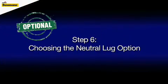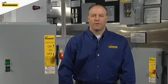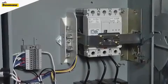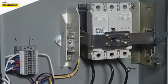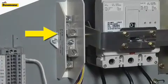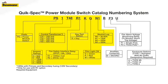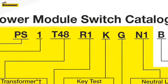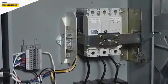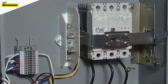Step six partly depends on your local code requirements for isolated neutral lug. We offer different options to match the load configuration of each power module. If your local code jurisdiction requires this feature, simply add the code that corresponds to the power module amperage chosen in step one. We specified 100 amps in our example, so we will need to add the N1 code to our part number sequence. If you are unsure and want to add this feature, this is a very inexpensive option.